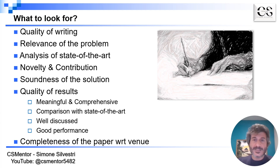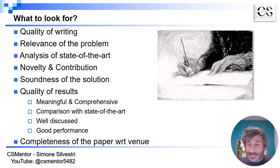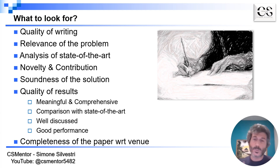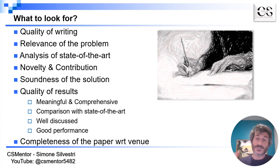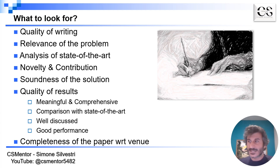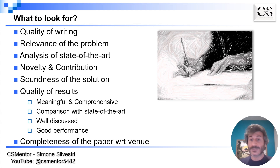It is also important to assess how complete the paper is with respect to the venue. If this is a workshop paper of just four pages, or even a work-in-progress paper with just two pages, you should expect a different contribution than if you are reviewing a top-level conference paper that is ten or eleven pages long.